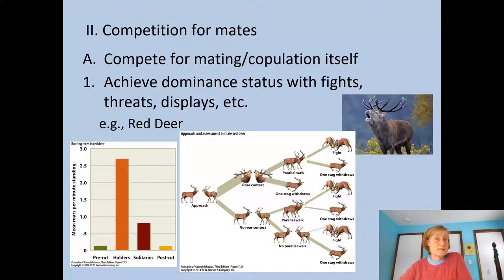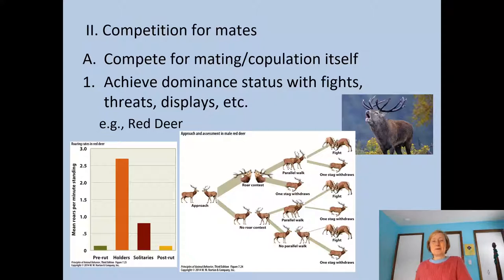Competition for mates tends to be strongest in males. And then there's also inter-sexual selection, which would be choosiness — selection for traits that enhance one's ability to succeed because they are choosy about whom to mate with. So we're going to focus in this video on competition for mates, intra-sexual selection, if you will. And there are different kinds of competitions that take place.